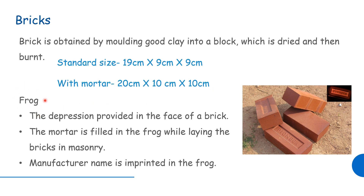The first feature is the frog. The frog is the depression provided in the face of a brick. The two reasons for the frog are the mortar fill. The frog is kept to help set the mortar.